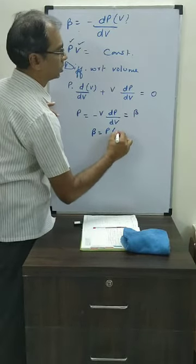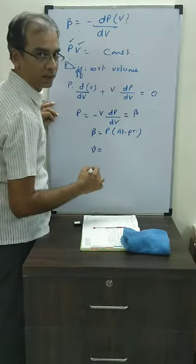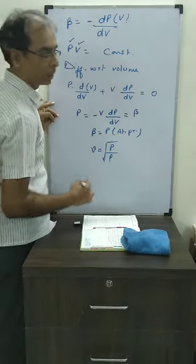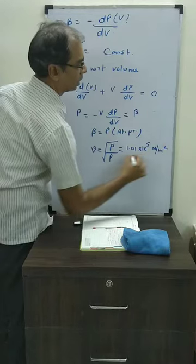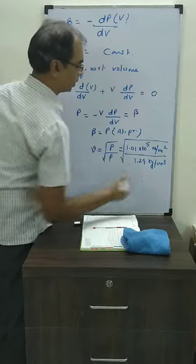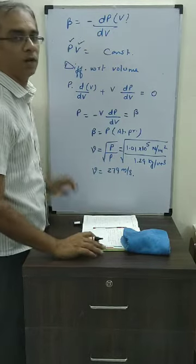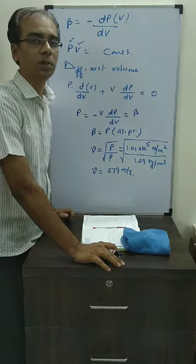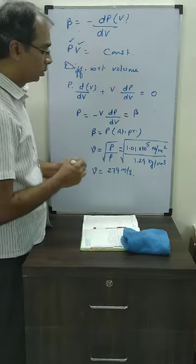Beta equals atmospheric pressure P. So according to Newton, velocity of sound through air is root over atmospheric pressure by density of air. Putting in atmospheric pressure 1.01 times 10 to the power 5 Newton per meter square, and density of air 1.29 kg per meter cube, the speed comes out to nearly 279 meters per second, which is very far from the experimentally found value of nearly 330 meters per second. So Newton's theory could not validate itself.